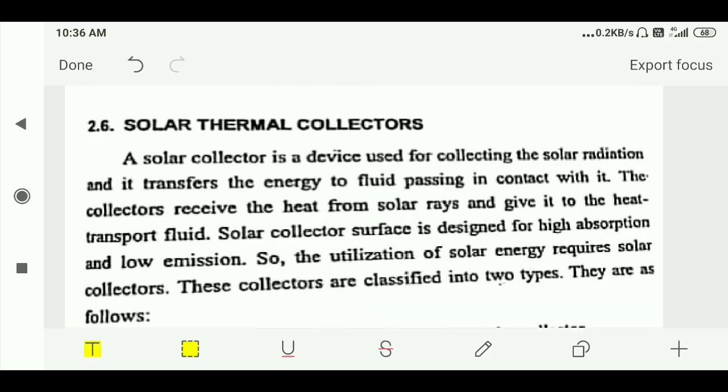What is a solar thermal collector? A solar thermal collector is a device used for collecting solar radiation and it transfers the energy to fluid passing in contact with it. The collector receives the heat from the solar rays and gives it to the heat transport fluid. Solar collector surface is designed for high absorption and low emission. The utilization of solar energy requires solar collectors.